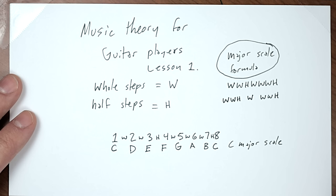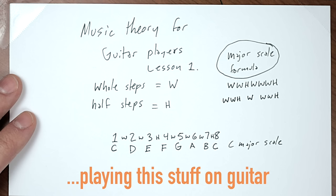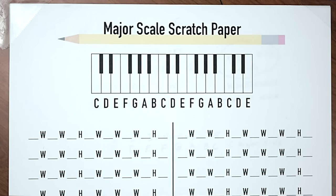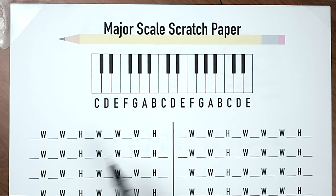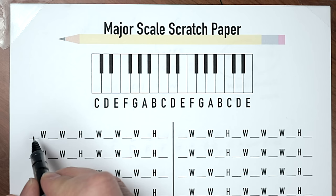Now I'll show a neat trick to learn why and how sharps and flats work using scratch paper. I've got a major scale scratch paper with a piano on it. I have the formula whole whole half whole whole whole half written out. You can download this for free via the link in the description. We'll start with C as we did before, using this as a template for all other scales.